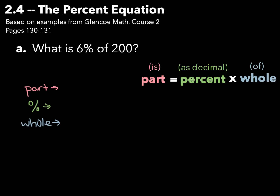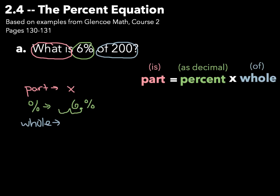What is 6%? We're given our percentage, and we're given 'of 200.' The 'of 200' is going to be our whole. What are we looking for? 'What is?' The 'what is' is our part, so our part is going to be the variable x that we do not know. Our percentage is 6%, but we need to write this as a decimal — move the decimal point two places to the left, which gives us 0.06. Our whole then is 200.